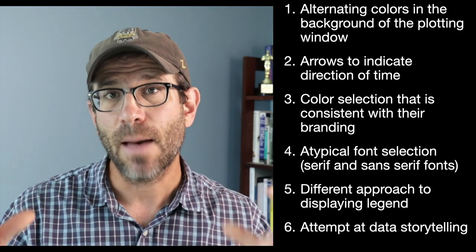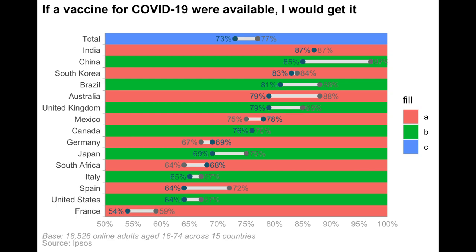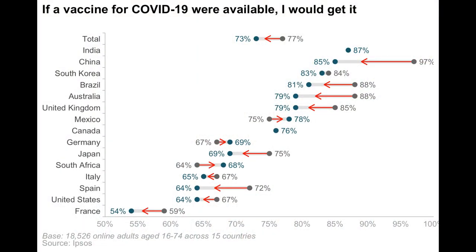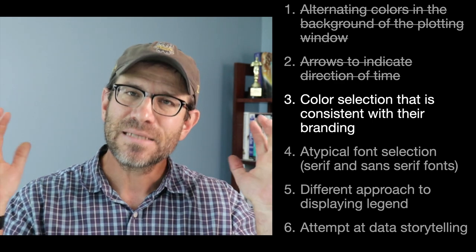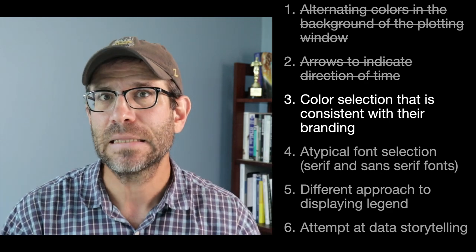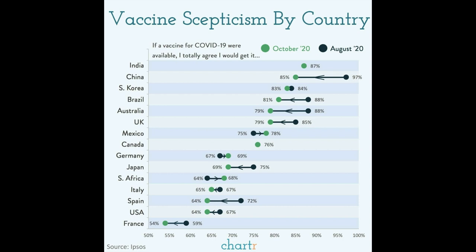It's a pretty cool newsletter — you should definitely subscribe. The first step of converting the Ipsos version to the Chart R version was coming up with a way to alternate the color in the background of the plotting panel. The next step, which is what we did in the last episode, was to add arrowheads to the lines to indicate the direction of time from August to October. But when we put these two steps together, it looks really bad. So what I want to do in this episode is use that combined figure to add in the color scheme from the Chart R figure to make a far more attractive version — and at the same time, learn about color and how to implement it in ggplot2.